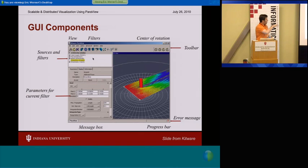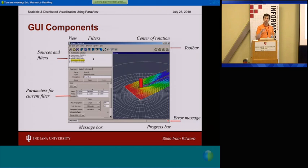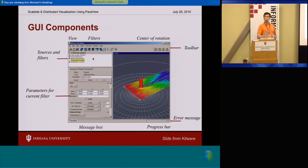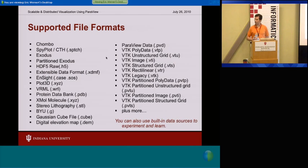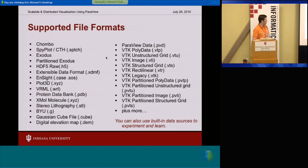For each object there are several tabs. One has parameters specific to that object. Every one of them has the ability to display some type of representation — in some cases just the bounding box. It doesn't know how to render it, but it knows something about the data and its extents in 3D space. There are lots of different file formats, some specific to VTK and ParaView, and import filters for lots of other commonly used things including protein databanks, so you can use this for molecular visualization. A lot of people use HDF, and you can bring in various geometry files.